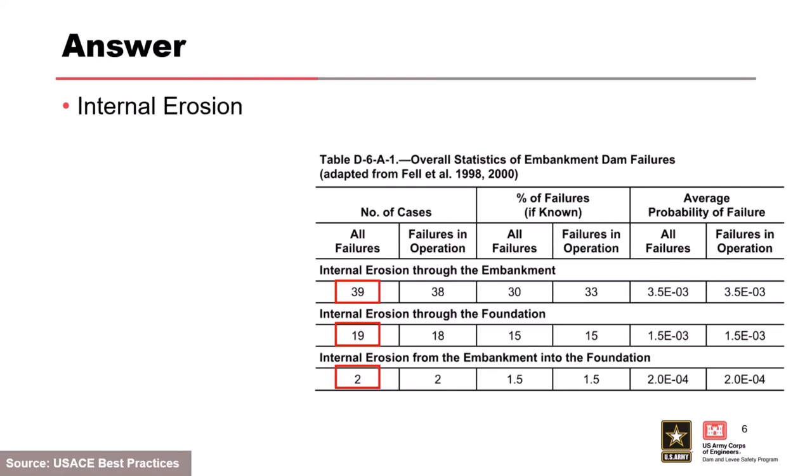This data is from Foster and Fell, out of best practices. They looked at where dam failures occurred — what part of the embankment or foundation. Of the known cases of internal erosion: 39 were in the embankment, 19 were through the foundation, and 2 were from the embankment into the foundation. There are quite a few through the embankment, but the foundation is still a significant problem.